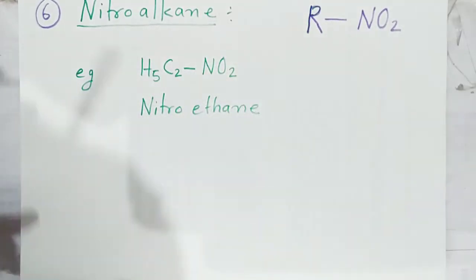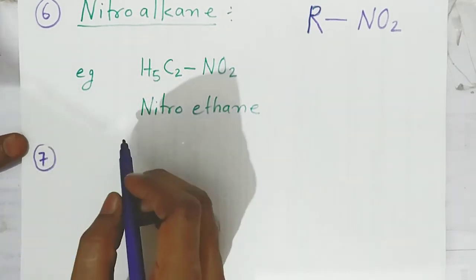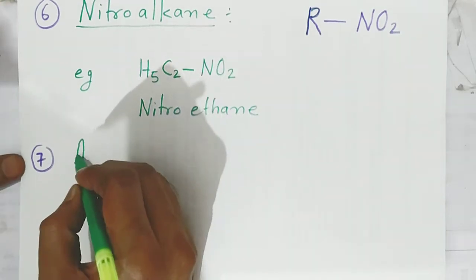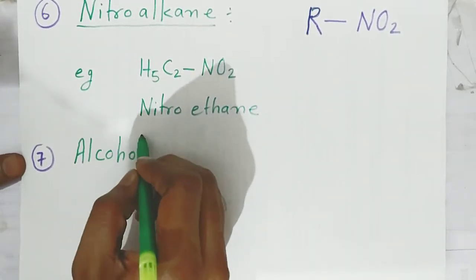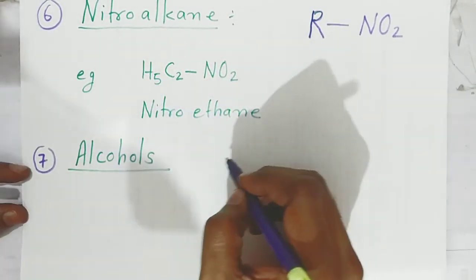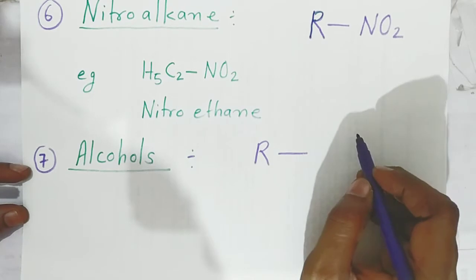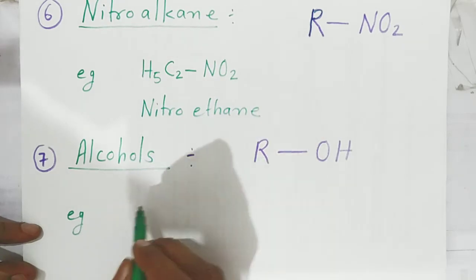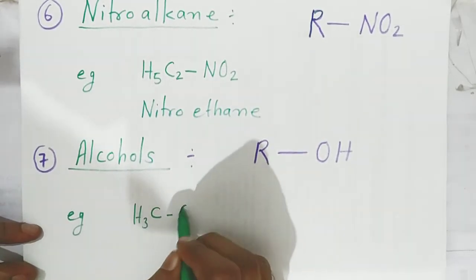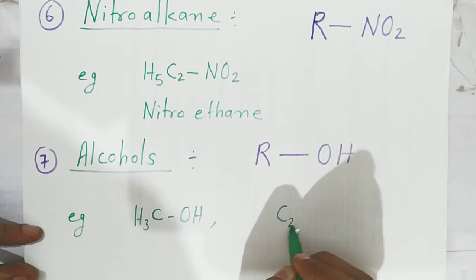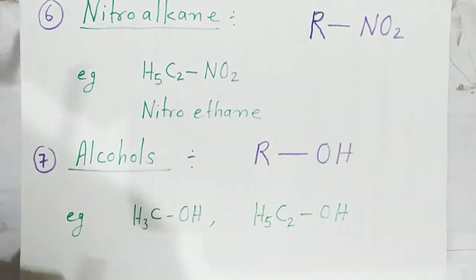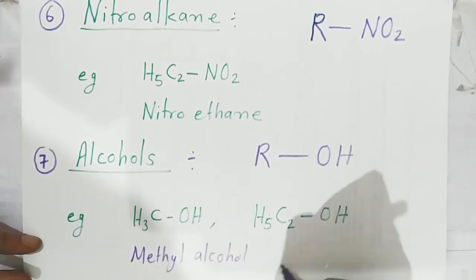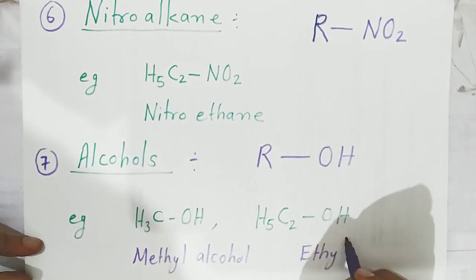The seventh functional group is alcohol, which is a very important and very famous functional group. In alcohol, the hydrogen of the alkane is replaced by a hydroxyl group (–OH). For example, if you put CH3, it is methyl alcohol; if you put C2H5, we call it ethyl alcohol.